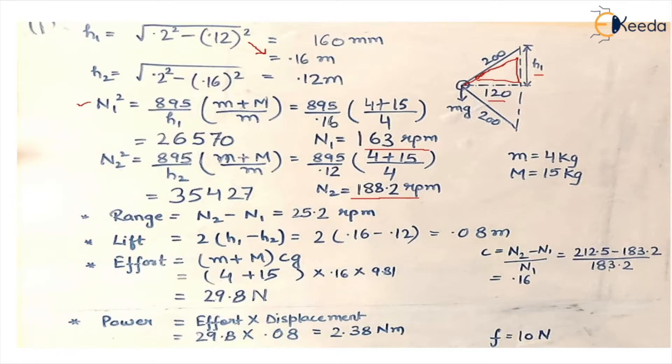Now what is range? Range is the difference between maximum and minimum speed. So you put the value in the formula and get the answer.